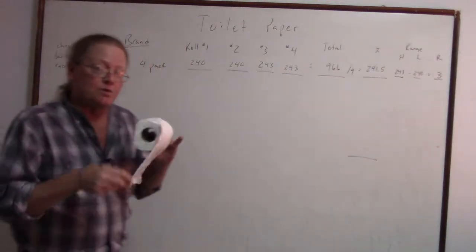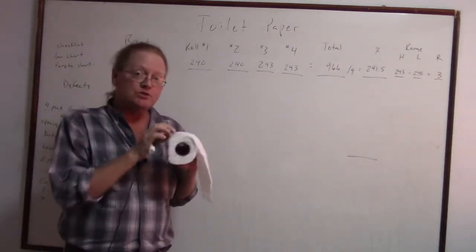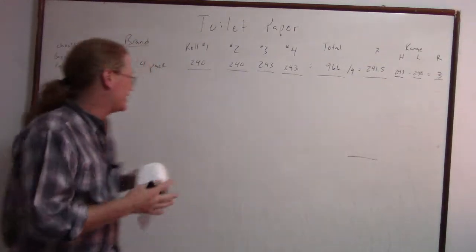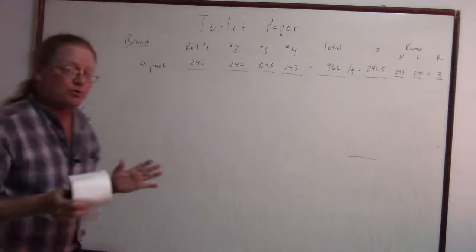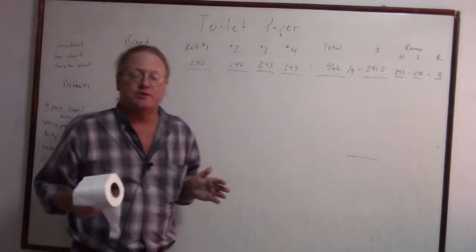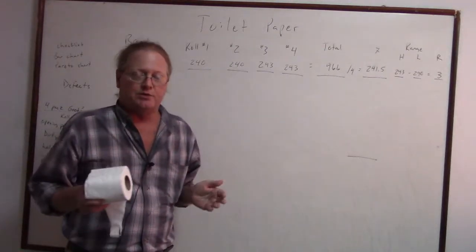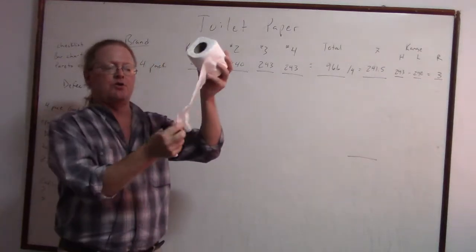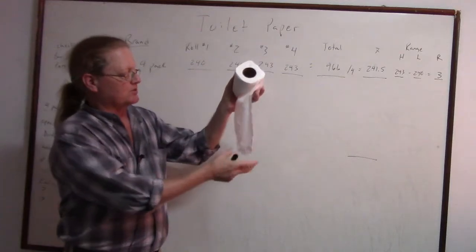So we are going to count the number of sheets on each of the four rolls in the pack. But while we're doing that, you might need a secretary or a note taker because we need to look at defects. How did this go? Did the opening start out right? It looked like it was off to a rough start.